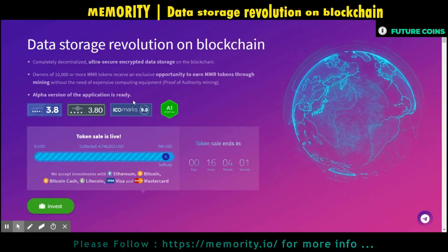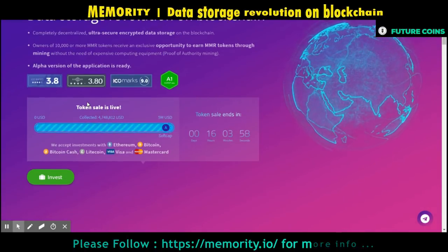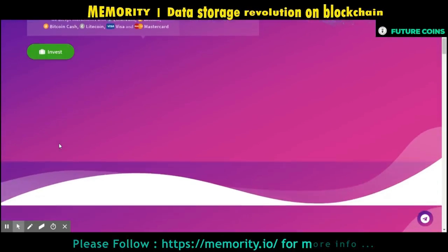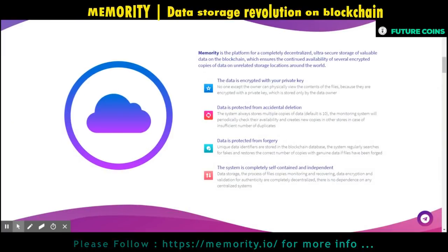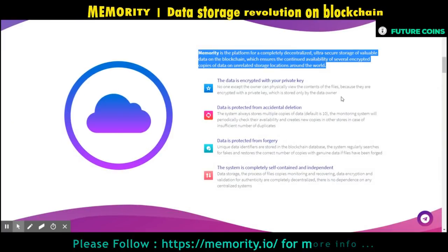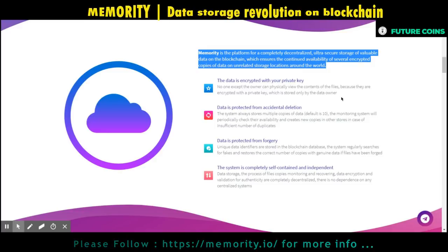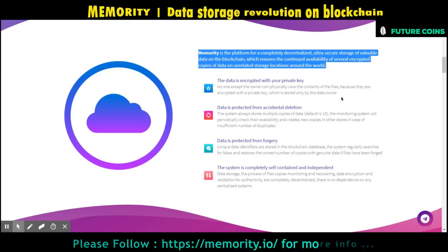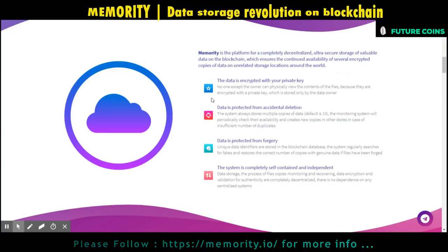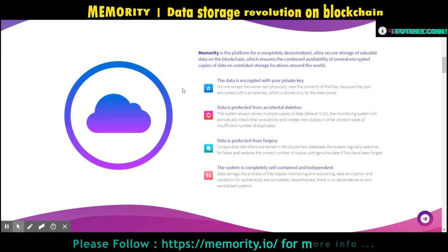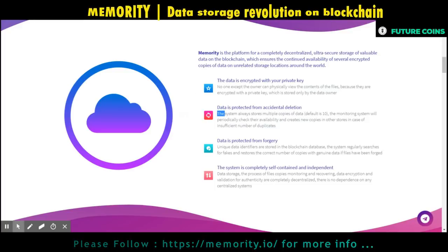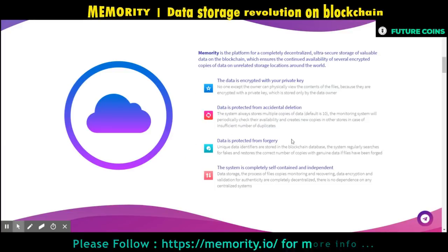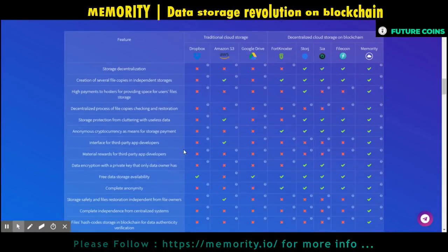Today I am going to mainly focus on their token and token sale details. Memority is a blockchain-based platform for encrypted decentralized cloud storage of valuable data. The system automatically keeps 10 file copies on independent storage all over the world at all times. Files are encrypted with a private key obtained only by their owner when the account is created, so nobody can see the data without first decrypting with this key.